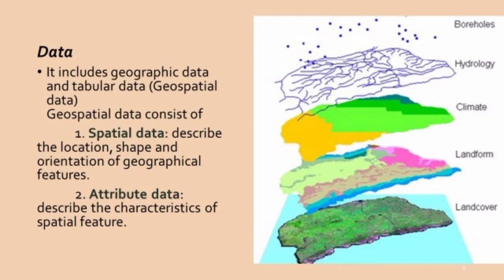Attribute data is the one with climate, hydrology, boreholes, etc. Attribute is the parameter whose details you want to add to this map. For example, you must have seen wheat cultivation of India shown on a map with shaded portions in states like Andhra Pradesh, indicating where paddy or wheat production occurs — that is how attribute data conveys details.